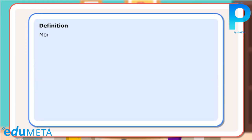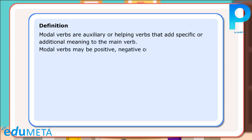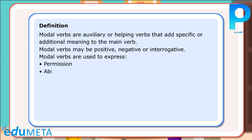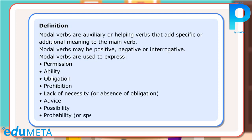Definition: Modal verbs are auxiliary or helping verbs that add specific or additional meaning to the main verb. Modal verbs may be positive, negative, or interrogative. Modal verbs are used to express permission, ability, obligation, prohibition, lack of necessity or absence of obligation, advice, possibility, probability, or speculation.